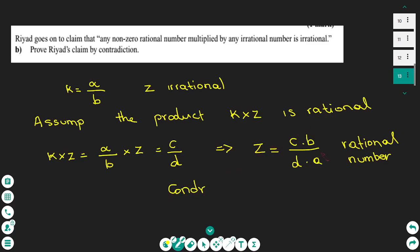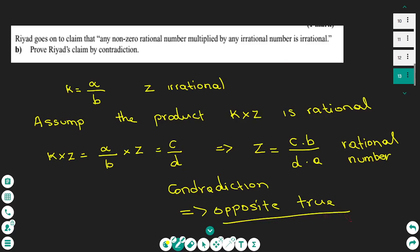Since that assumption leads to a contradiction, the opposite is true. Therefore the multiplication of a rational number and an irrational number is irrational — the original claim is confirmed. This brings us to the end of the lesson; if you like it, please click the like button and subscribe to see more lessons like this one.